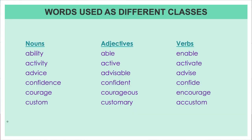Now let's look at words used as different classes. Here is the chart. Starting with nouns — the noun 'ability': its adjective form is 'able', and its verb form is 'enable.' Similarly, 'activity': the adjective form would be 'active', and the verb form would be 'activate.'